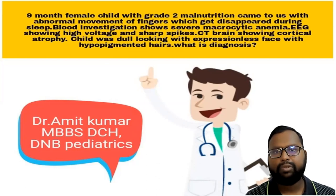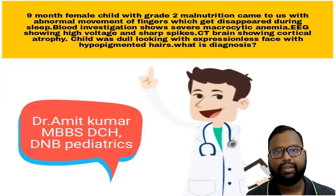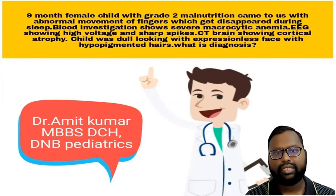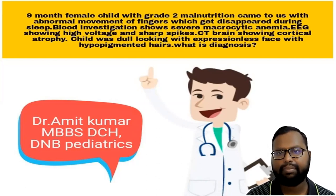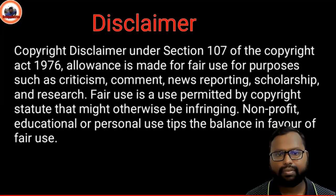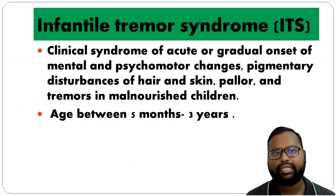Any movement which disappears during sleep and occurs in the distal part of the limb is a tremor. This child is having tremor with severe macrocytic anemia and is malnourished. This condition is commonly seen in poor socioeconomic status.